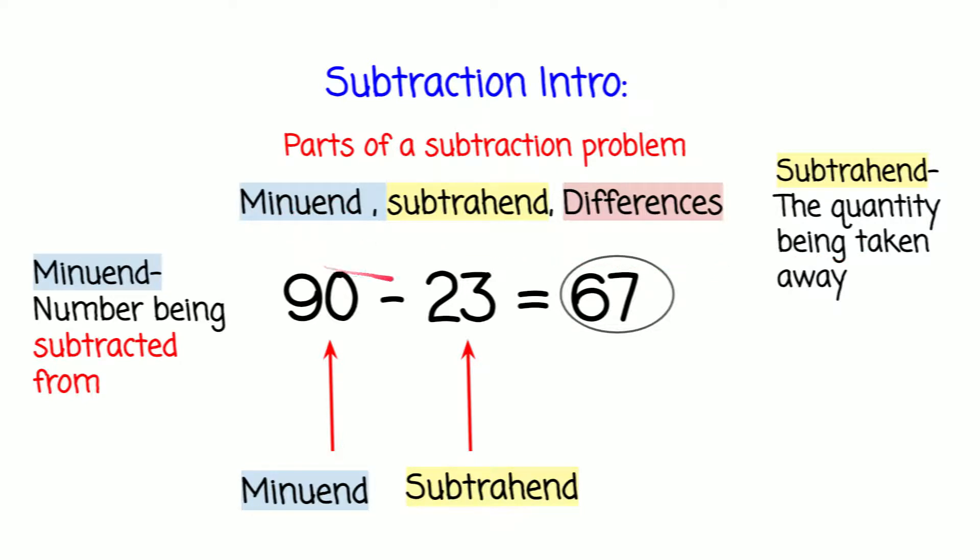The 23 is a subtrahend because we have 90 something, and we're taking 23 away from the 90 something. So 23 is our subtrahend.